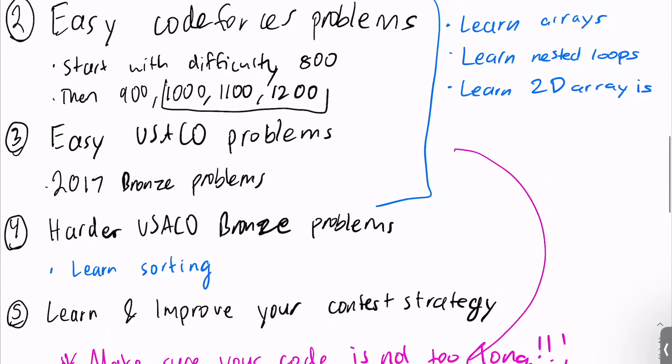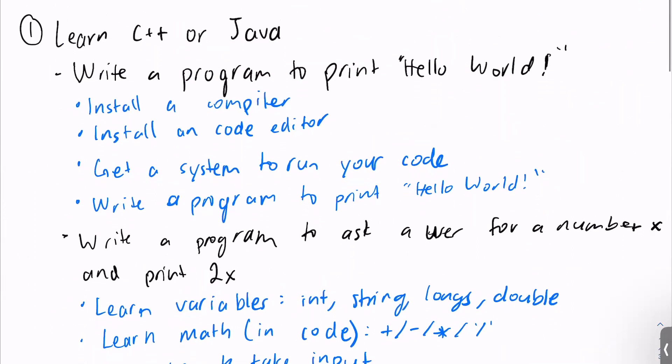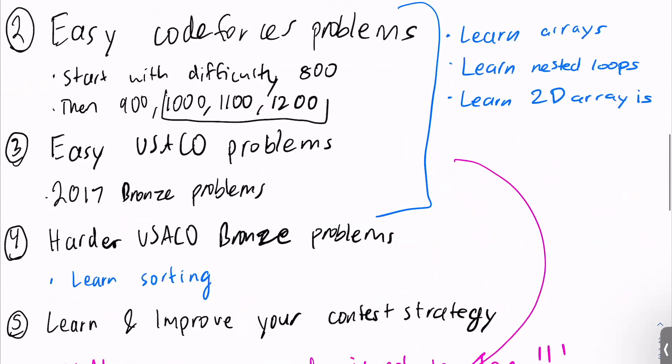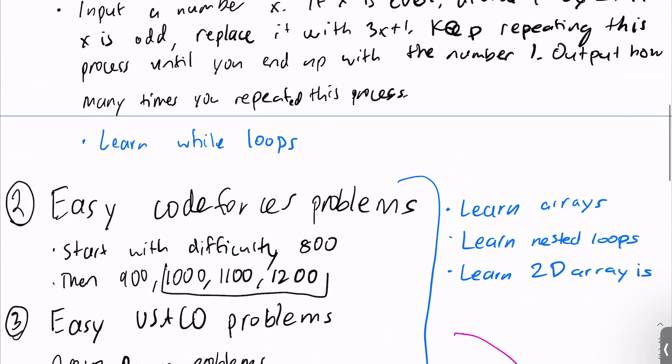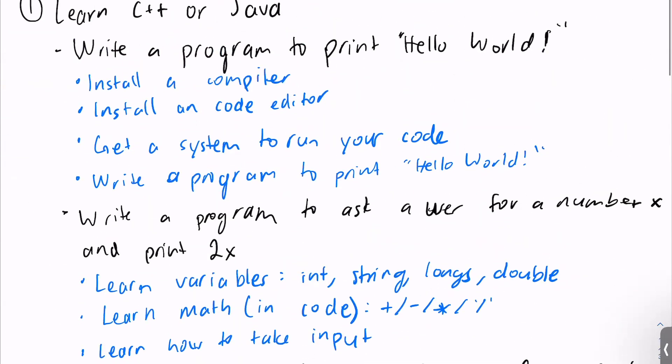So hopefully, these five steps would help you get started with coding. You'll learn C++ or Java, then easy code forces problems, then easy USACO problems, then hard USACO problems, and then improve your contest strategy. Go through these steps, get started with coding, and let me know how your USACO journey goes because I love hearing those stories. Hope you have a great day, and I'll see you later. Bye.